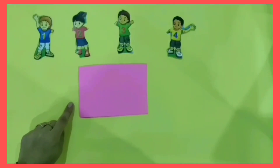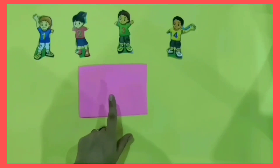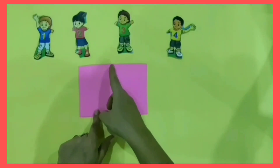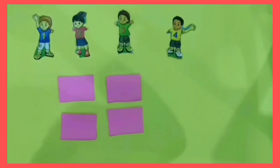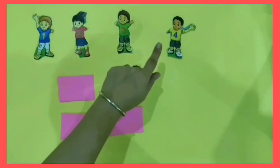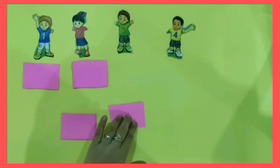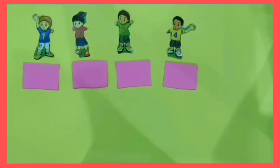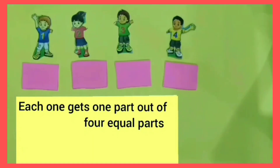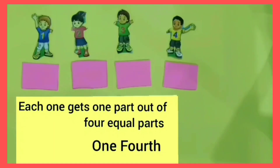Now we discuss it in another way. I have one drawing sheet and I have to distribute it among four children. I will cut this drawing sheet into four equal parts. Now I have four equal parts of the drawing sheet and I distribute one to each child. Each one gets one part out of four equal parts, and when we divide one whole thing into four equal parts, each part is known as one-fourth. In numbers, we write it as 1/4.